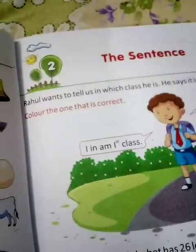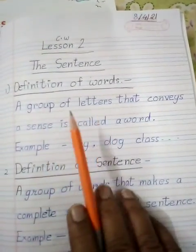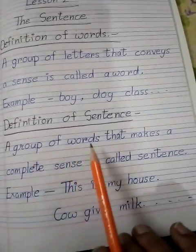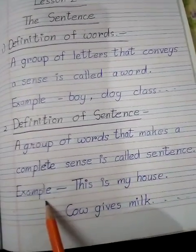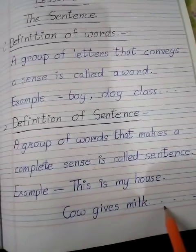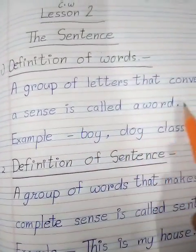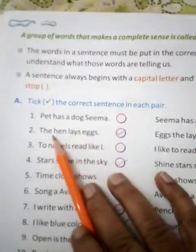Listen to the sentences. In the previous video I have already explained about sentences and words. We are writing the definition of word and the definition of sentence. What is a sentence? A group of words that makes a complete sense is called a sentence. For example, 'This is my house,' 'Cow gave us milk.' And what is a word? A group of letters that conveys a sense is called a word. For example, boy, dog, class, etc.